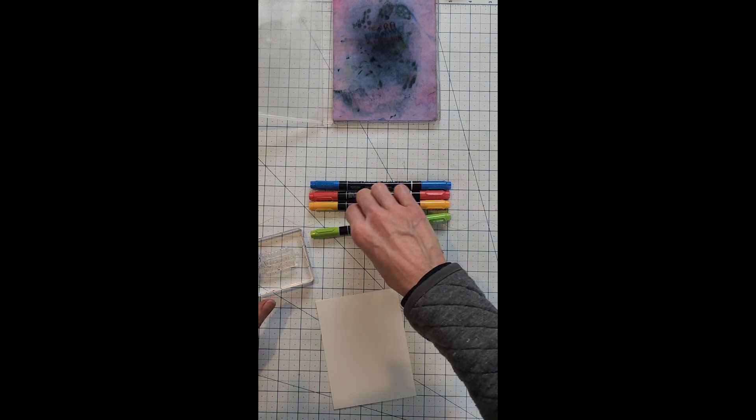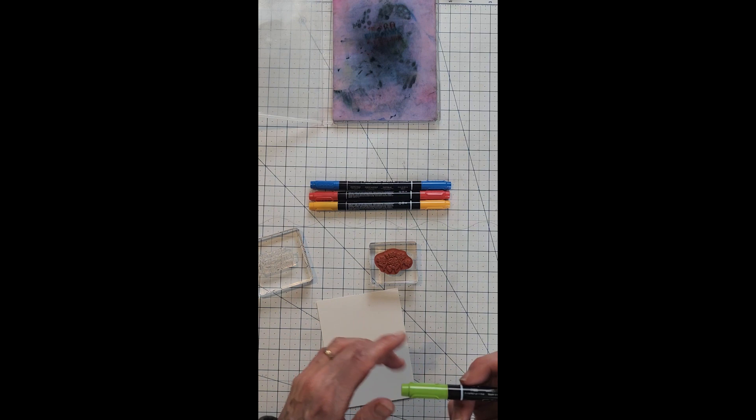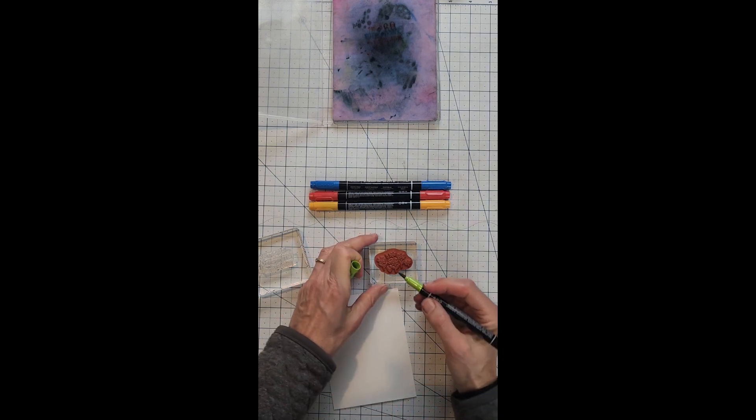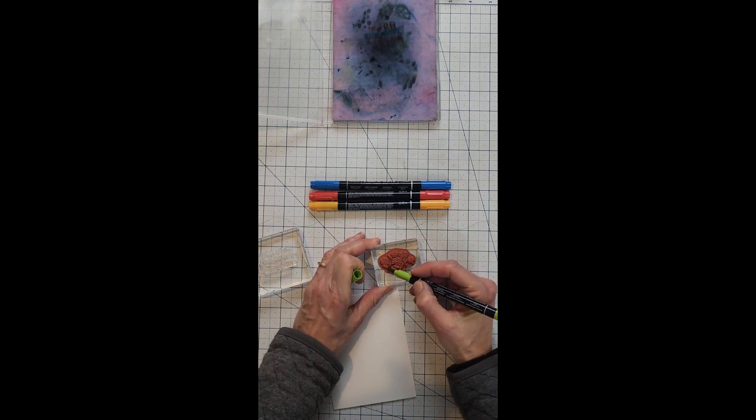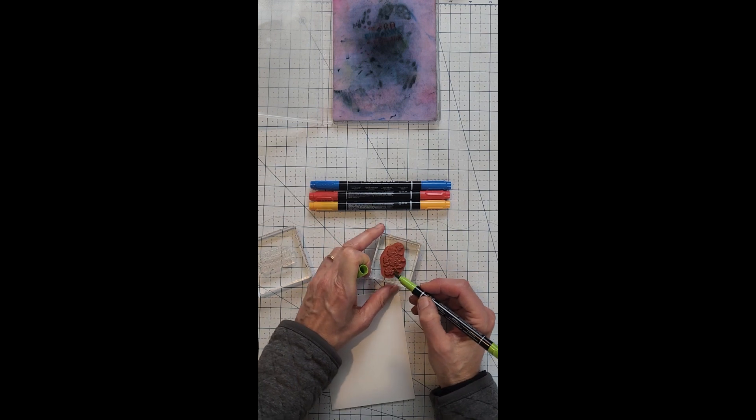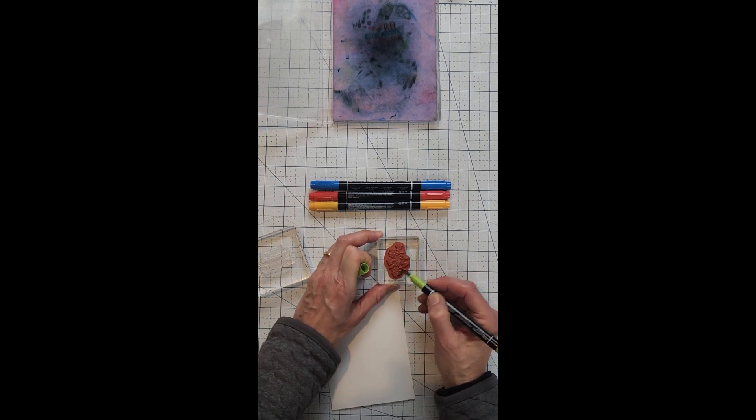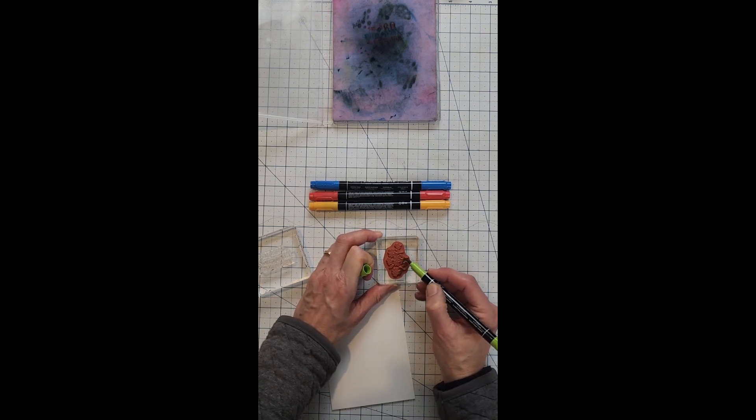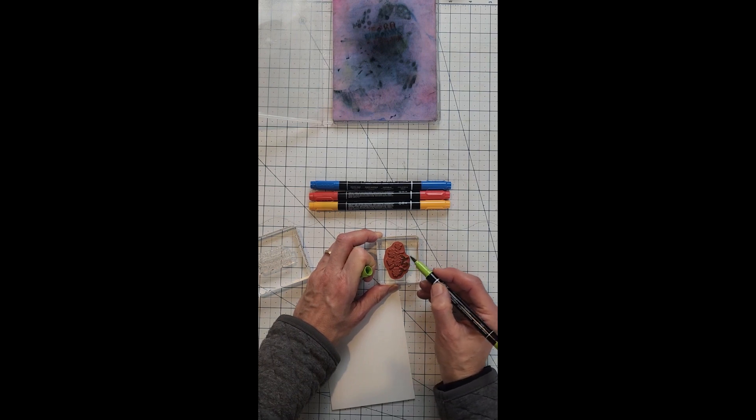Let me show you. So we'll start with the cling one, the red rubber. Just apply the ink. Roll over your stamp.